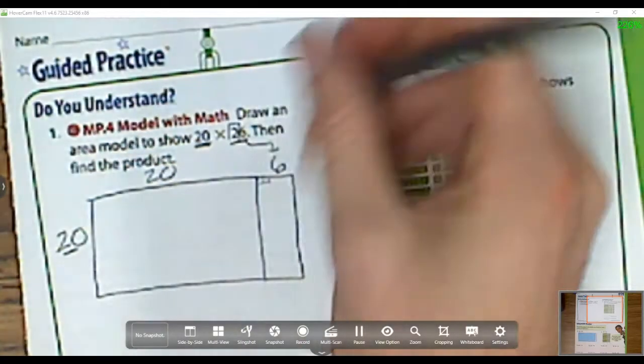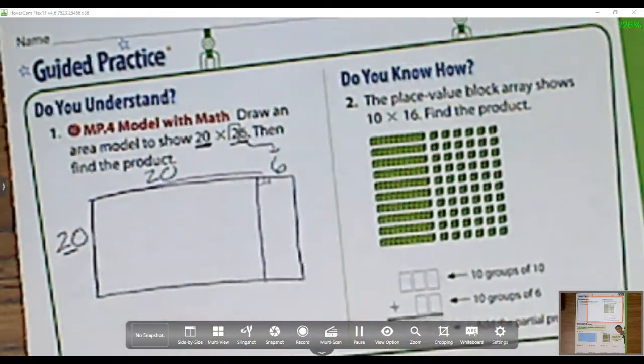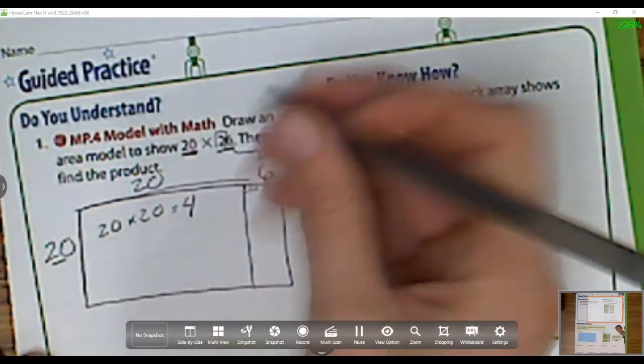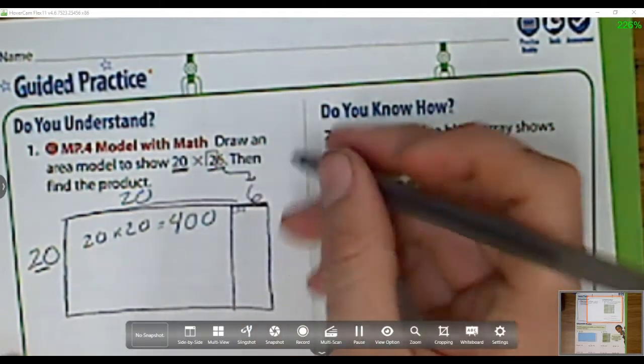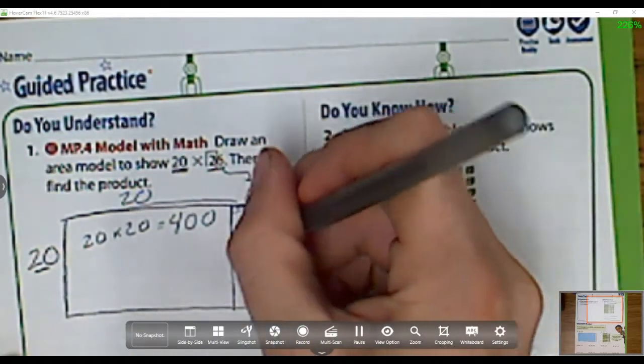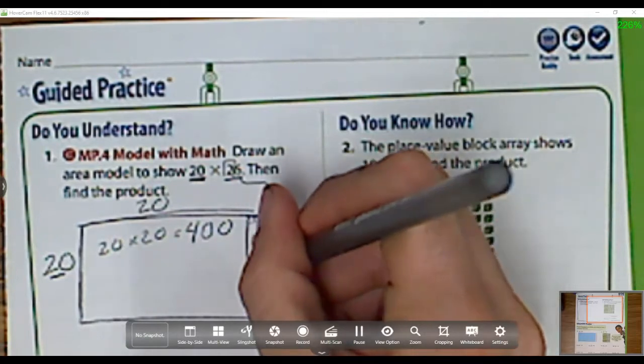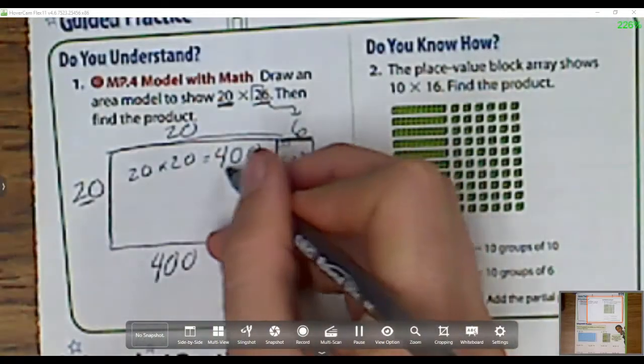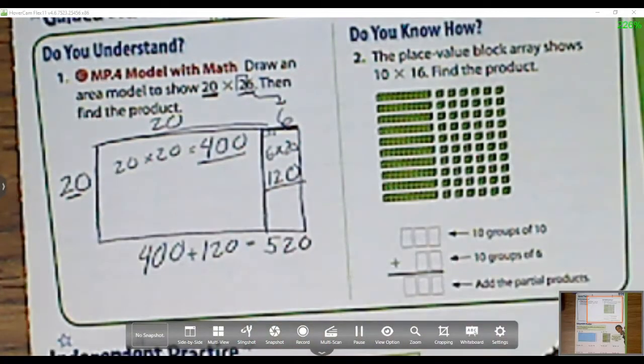So this is my area model. And now I'm going to use that to solve by filling in these lengths. I have a length of 20 and a length of 20, so that's 20 times 20. My basic math fact is 2 times 2, which is 4, and I add two zeros on it, 400. It has a length of 6 and a width of 20, so that's 6 times 20. My basic math fact is 6 times 2 is 12, and I add that zero on for 120. Now what do I do for my product? I add the two boxes together, so I add 400 plus 120 and I get 520 for my answer.